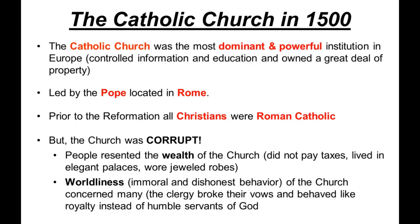A lot of people thought the church was corrupt. People resented how wealthy the Church was — the Cardinals, the Bishops, the Priests — but they didn't pay taxes. They lived in elegant palaces and wore jeweled robes while poor people were poor. These were members of the Church. Why weren't they dressed modestly and looking like they represented God instead of money? They had worldliness, were immoral and dishonest. There were priests who were having children, priests who were stealing money. They broke several vows, and people were upset because they weren't acting like humble servants of God.